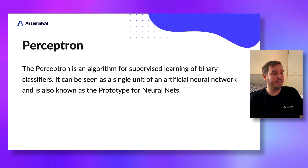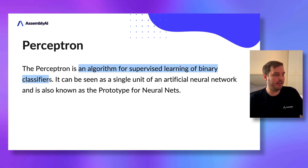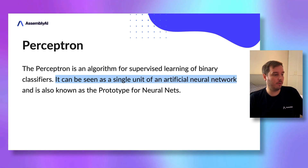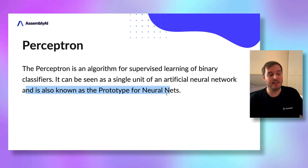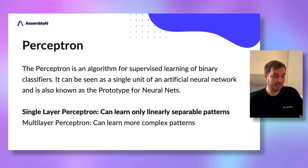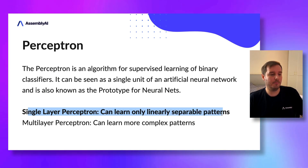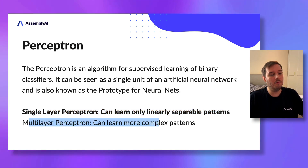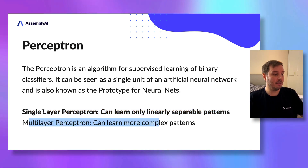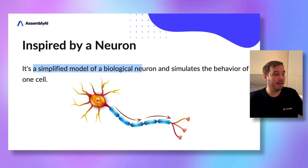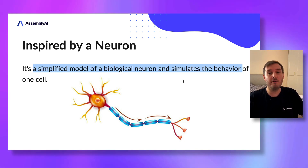The Perceptron is an algorithm for supervised learning of binary classifiers. It can be seen as a single unit of an artificial neural network and is also known as the prototype for neural nets. A single layer Perceptron can learn only linearly separable patterns, while a multi-layer Perceptron can learn more complex patterns. In this lesson we focus on the single layer Perceptron, which is inspired by neurons — a simplified model of a biological neuron that simulates the behavior of one cell.